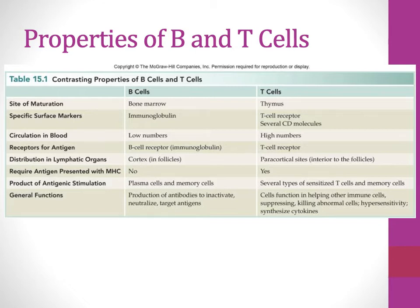In lymphatic organs, B cells are found in a structure called the cortex, while T cells are in the paracortical sites interior to the follicles. For T cells, antigens must be presented on MHC; B cells do not require this — though B cells can undergo phagocytosis, just not as well as other phagocytes. Upon antigen stimulation, B cells become plasma cells and memory cells. T cells differentiate into helper, cytotoxic, and regulatory T cells, plus memory. The general function of B cells is to produce antibodies that inactivate, neutralize, or target antigen.